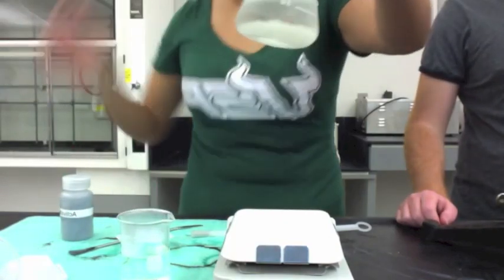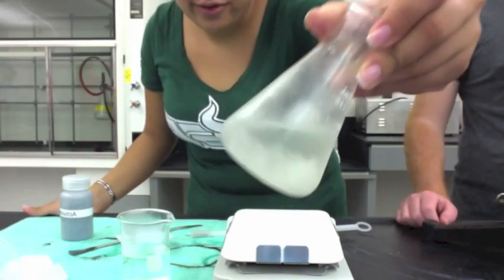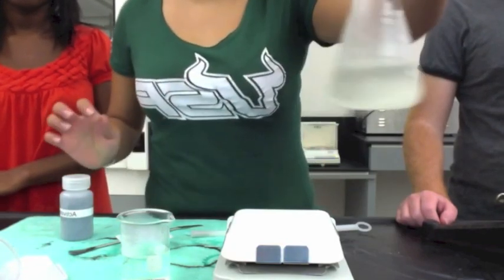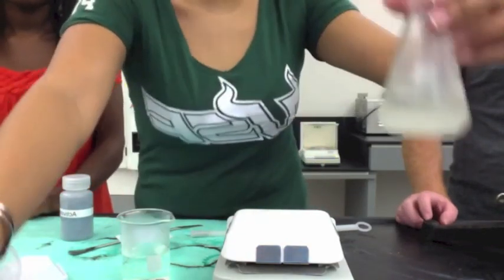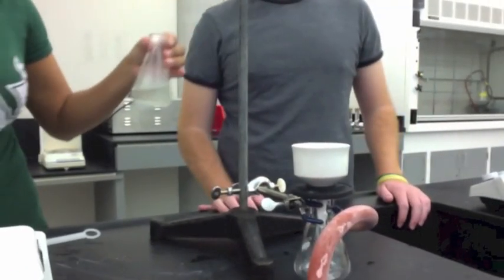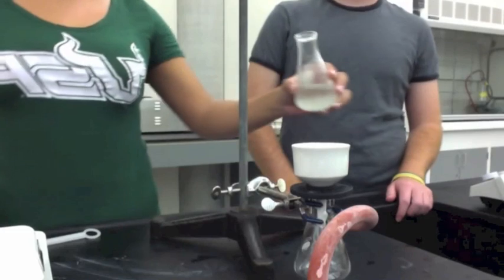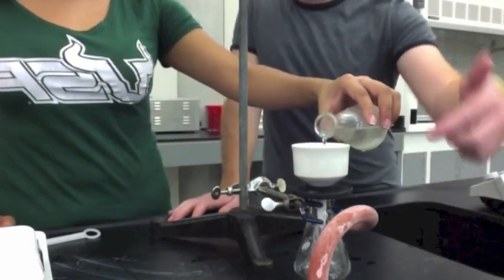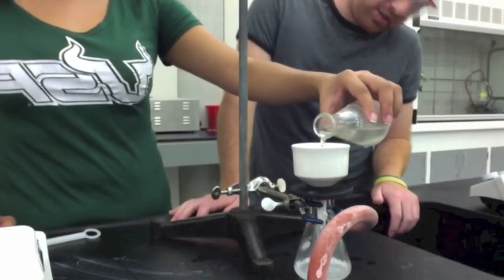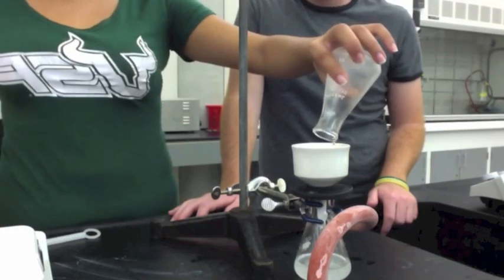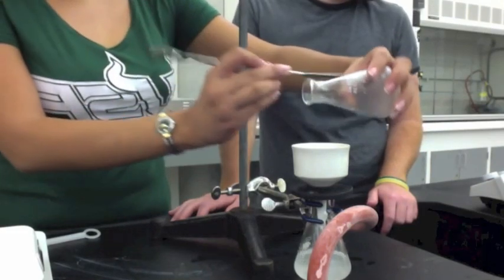After it has cooled down, it should form crystals on the bottom in the solution and we'll use vacuum filtration to vacuum the crystals out. As you see, we have our setup here. Slowly pour in the water with the crystals into the Buchner funnel. Make sure you have your filter paper in there already.